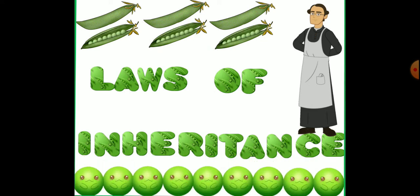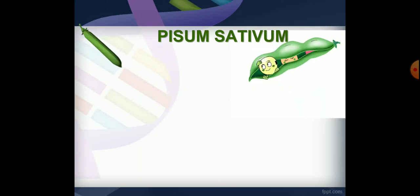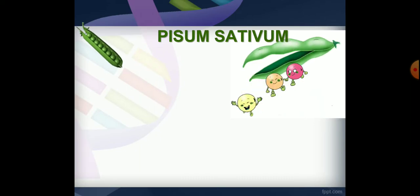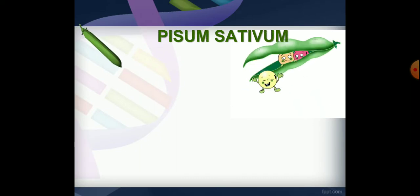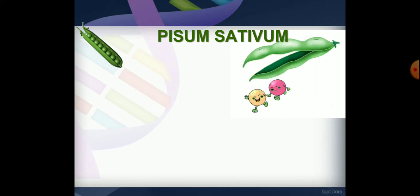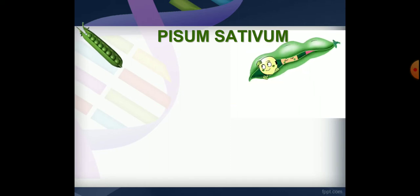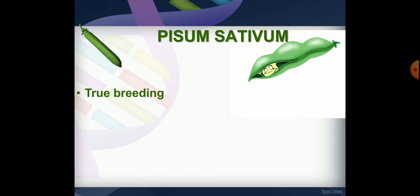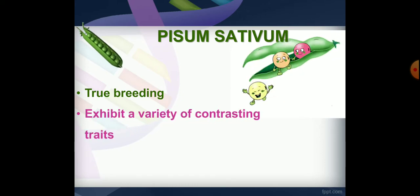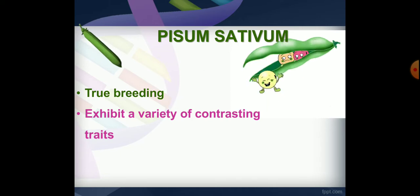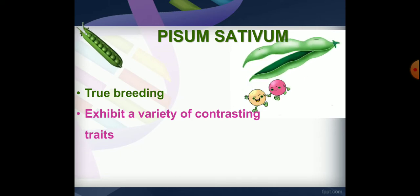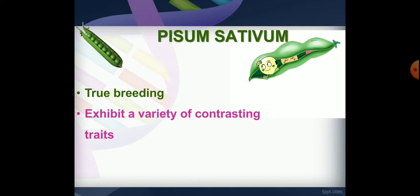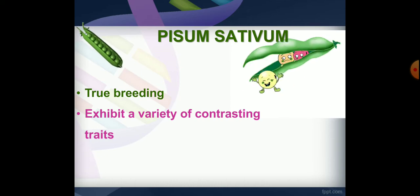Gregor Johan Mendel is the father of genetics. He conducted experiments on pea plants. The second reason is that pea plants exhibit a variety of contrasting traits. I am going to explain the characters.